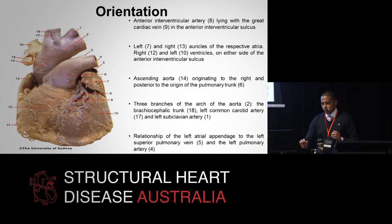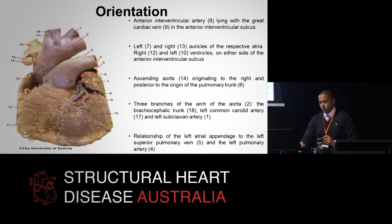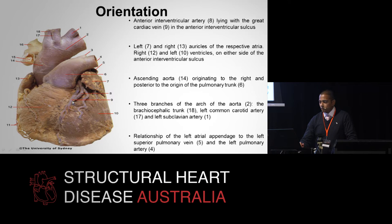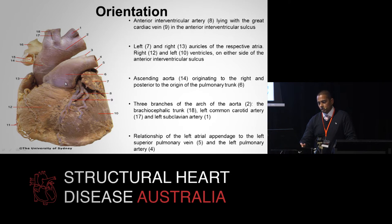By way of orientation, if we look at this prosection which is being rotated to the right so you can see more of the left-sided structures — we can see the anterior interventricular artery running alongside the great cardiac vein in the anterior AV interventricular sulcus, and then on the left side the ventricle, and here you can see the prominent auricle of the left atrium and the auricle of the right atrium, otherwise known as the left appendage and right appendage.